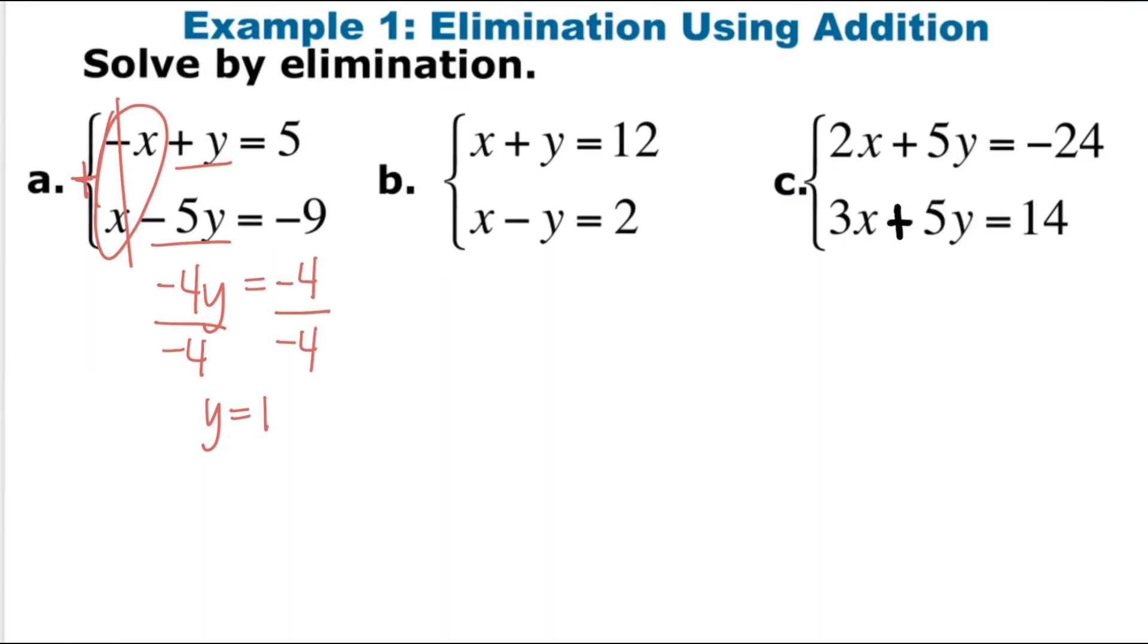Positive y minus 5y would get us negative 4y. 5 and a negative 9 would get us negative 4. Divide both sides, we get that y is a positive 1. Remember we don't want to know just y, we also want to know x so you can plug in to either one of these to get your x. If we start with the first equation, we have negative x plus y, which we're saying is 1, equals 5. We're going to go ahead and solve. Subtract 1, we get that negative x equals 4. So that's like a negative 1x divided by negative 1, we get that x is negative 4.